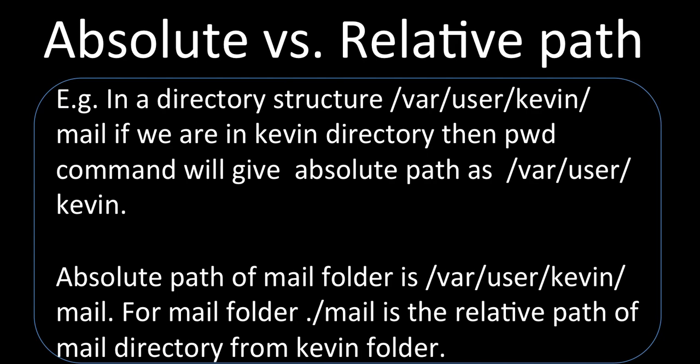For the `mail` folder, if we are in the `kavin` directory, then `./mail` is the relative path. The dot `.` stands for the current directory — in this case, `/var/user/kavin` — and then `/mail` is the relative path of the mail directory from the kavin folder. We use relative paths because we do not want to keep specifying the full path every time.